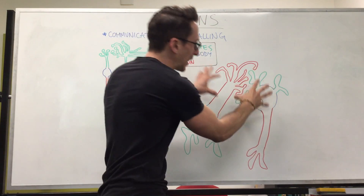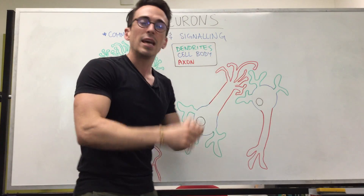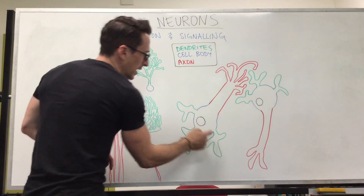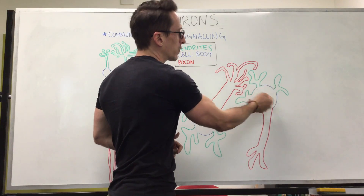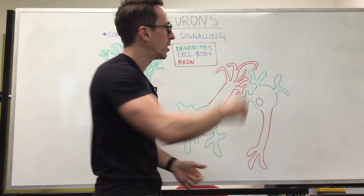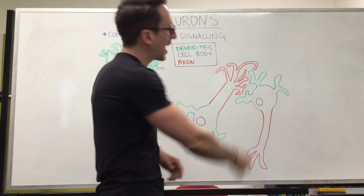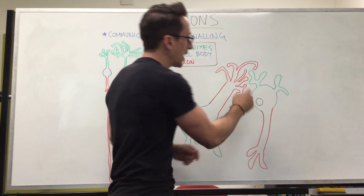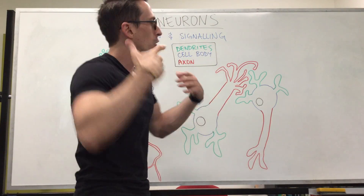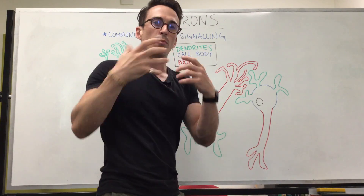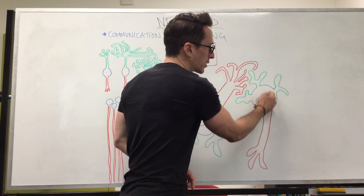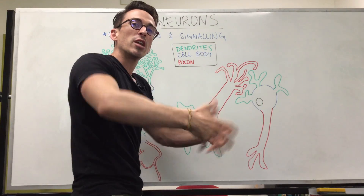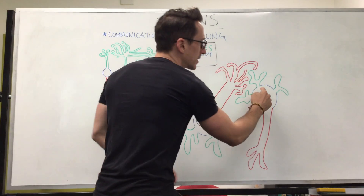That means the amount of complexity and options for communication and signals to be sent is more than the number of stars in our solar system — enormous. Now, the dendrites' job is to receive information, as you can see they're receiving information from another neuron. The neuron sending the information is known as the presynaptic neuron. The neuron receiving the information is called the postsynaptic neuron, and the space between them is called the synaptic cleft. In order for the presynaptic neuron to talk to the postsynaptic neuron, it needs to cross this gap, and it does so by releasing neurotransmitters. Neurotransmitters diffuse from the presynaptic to the postsynaptic neuron and bind to receptors on the dendrites, and sometimes receptors on the soma or cell body itself.